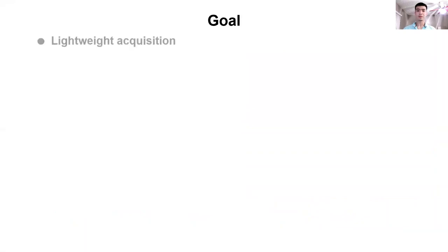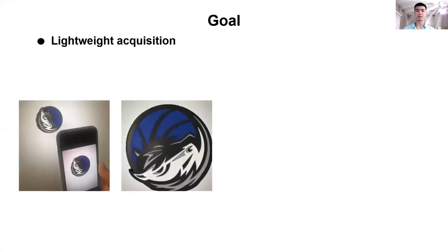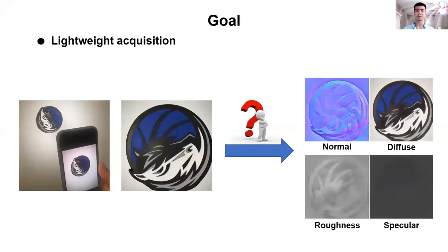Instead, we are interested in estimating the material properties of a real planar surface using a lightweight acquisition approach. Specifically, given a single-flash image of a planar surface captured with any standard form, our goal is to develop a system taking this image as input and outputting the full material properties. In our work, we use the Cook-Torrance model, which describes the material properties by normal, diffuse albedo, roughness, and specular albedo.